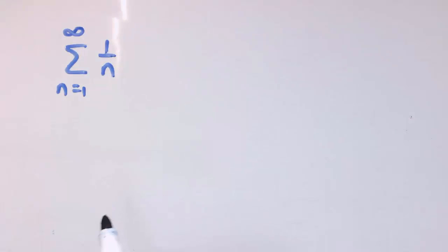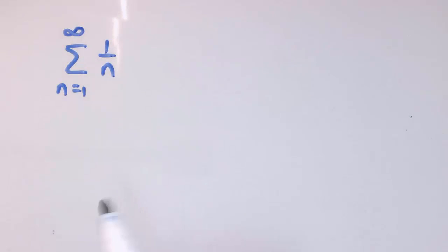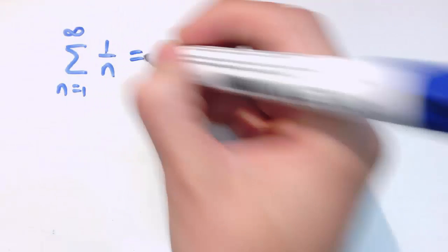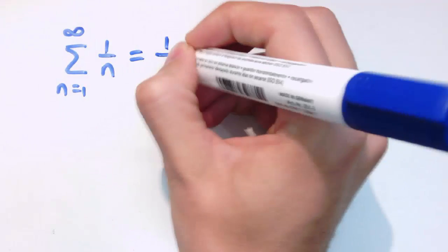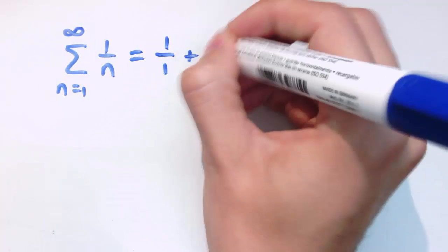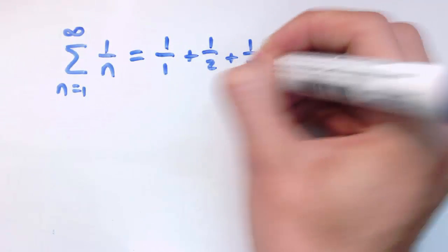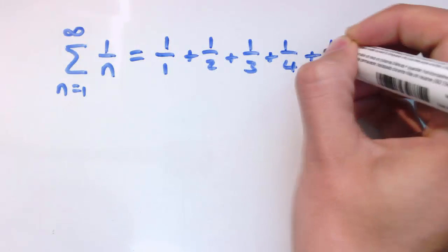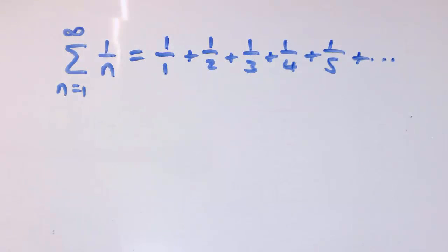Here's my sequence: 1 over n, and it's n equals 1 to infinity. Let's make sure you've got a sense of what this series is — it's 1 over 1, plus 1 over 2, plus 1 over 3, plus 1 over 4, plus 1 over 5, etc.